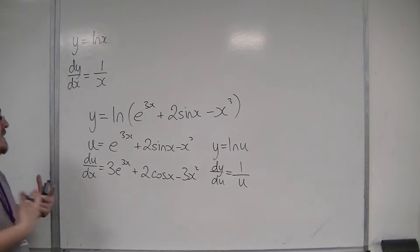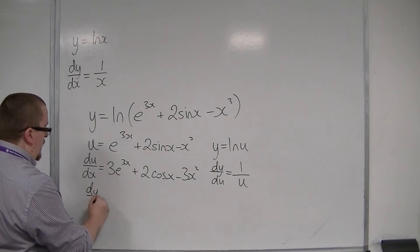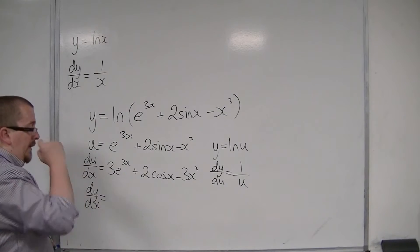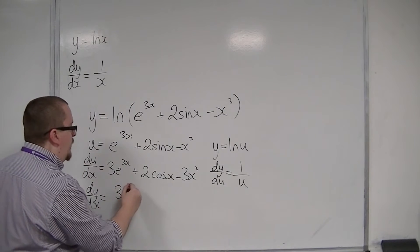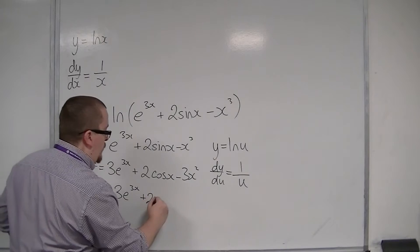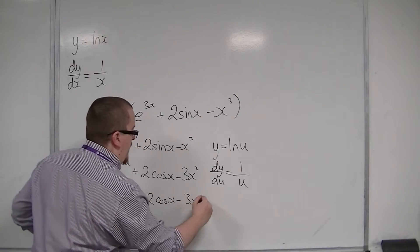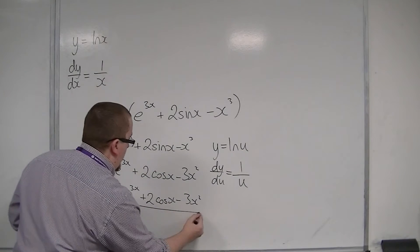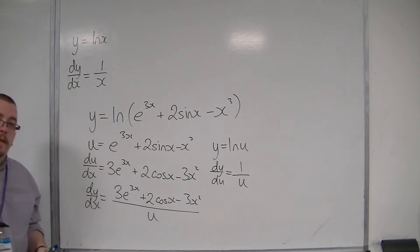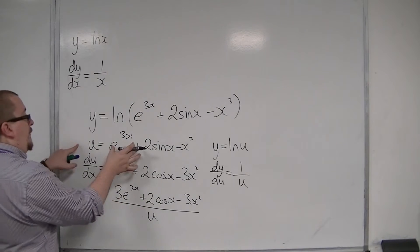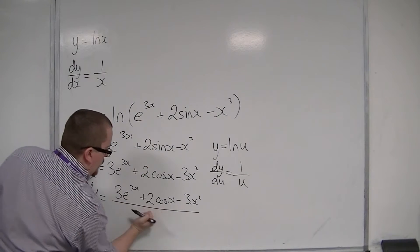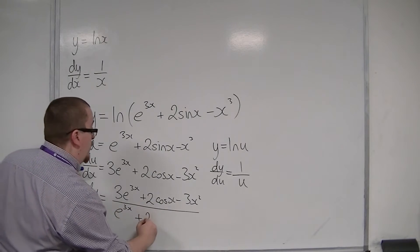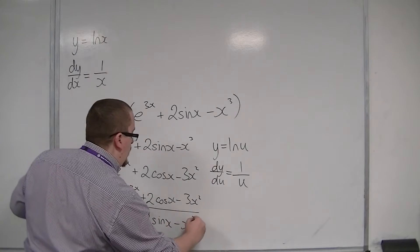So dy by dx is dy by du times du by dx. So I would have 3e to the 3x plus 2 cos x, minus 3x squared, multiplied by the 1 over u, which would just be this over u. But remember, u was this bit here. So I can replace that u with e to the 3x plus 2 sin x minus x cubed.